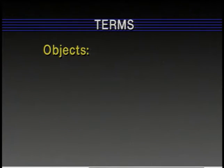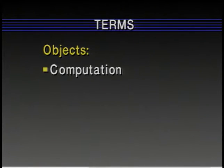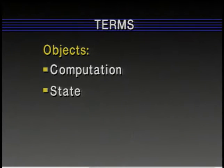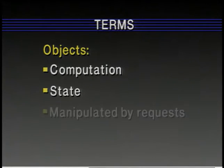In object-speak, there are a lot of buzzwords used in fairly ambiguous ways. To me, an object is a combination of computation and state that are considered to be a unit. An object has its own integrity — you can't just go in and manipulate part of it. The only way to manipulate an object is by sending requests to it and letting it perform the actual operations.